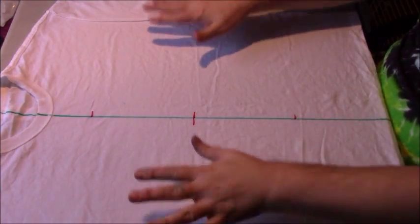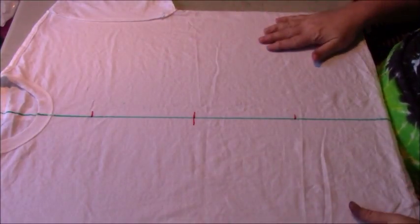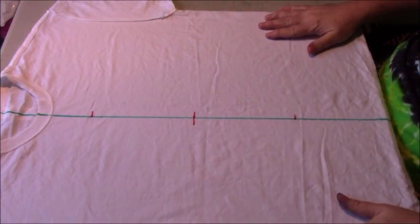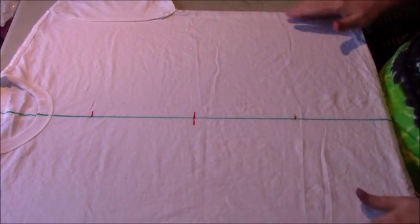I'm starting with a shirt that's been soaked in soda ash and spun out so it's just barely damp. I've turned it inside out and centered it, and there's a video on centering shirts if you need that.